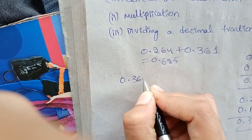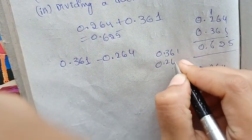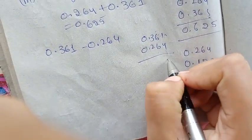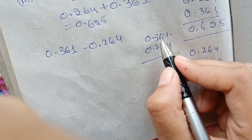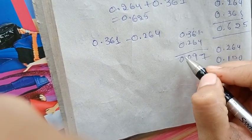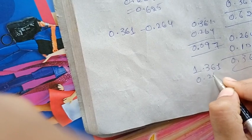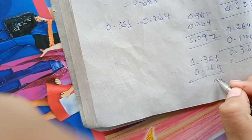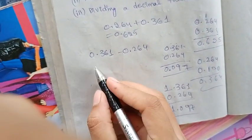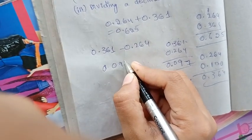Subtraction: 0.361 minus 0.264. Here we have 1, we have 11, we have 4, 10, 7. We have 5, we have 2, we have 6. So this is 0. Our point is 0. So this is 1.361 minus 0.264. The answer is 0.097.